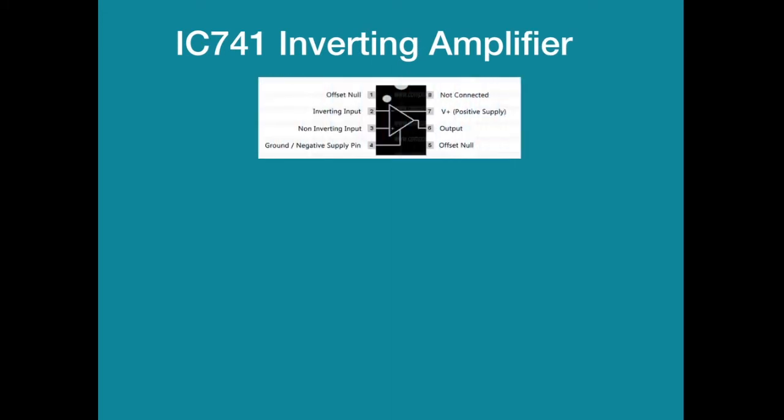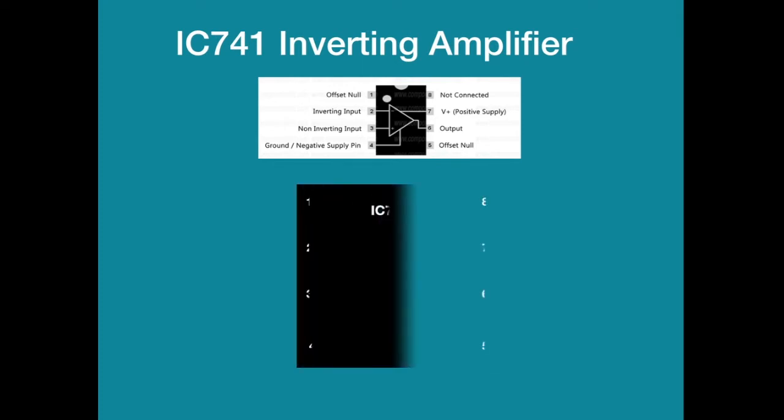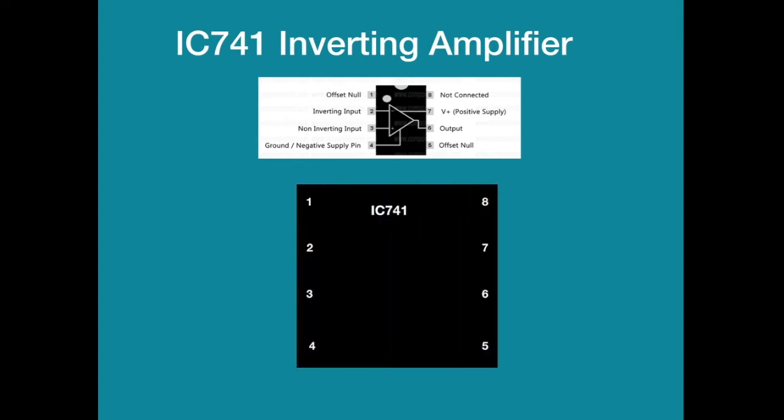Now we will see the connections for IC741 op amp used as inverting amplifier. These are the pin details here. As far as the connection goes, three pins - pin number one, pin number five and pin number eight are not connected.